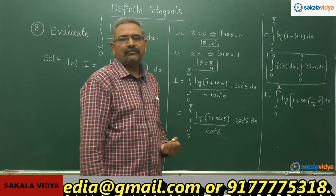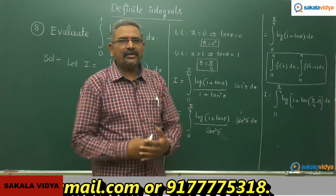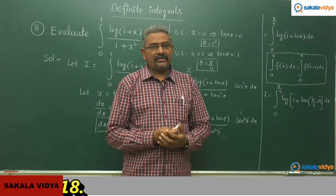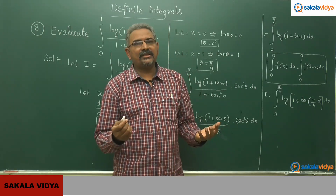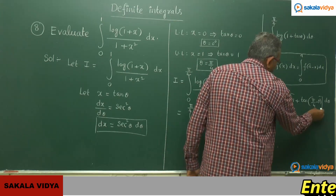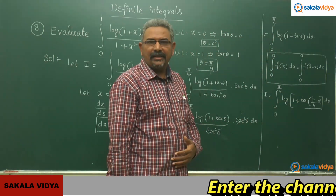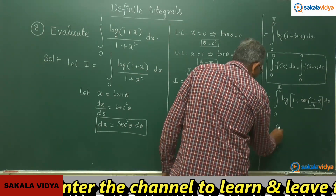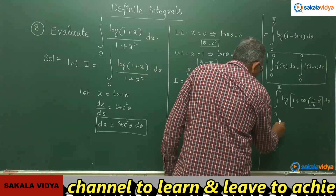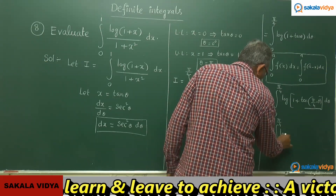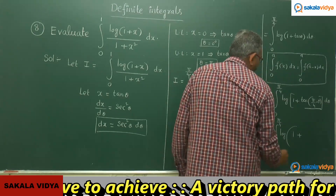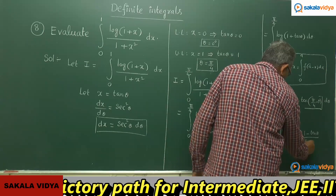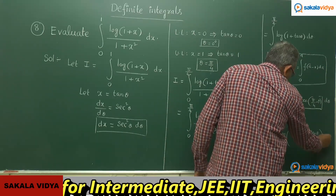From the compound angle chapter in trigonometry, we have the formula: tan(45° − θ) = (1 − tan θ) / (1 + tan θ). So that expression is replaced by (1 − tan θ) / (1 + tan θ), giving I = integral 0 to π/4 of log(1 + (1 − tan θ)/(1 + tan θ)) dθ.